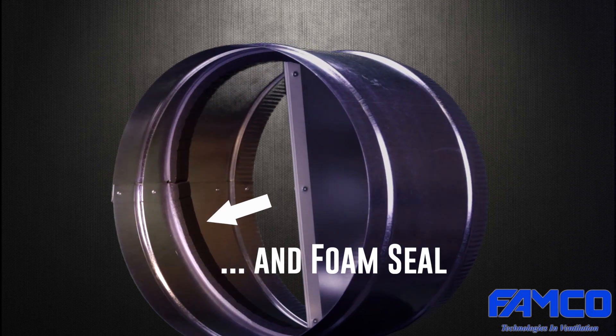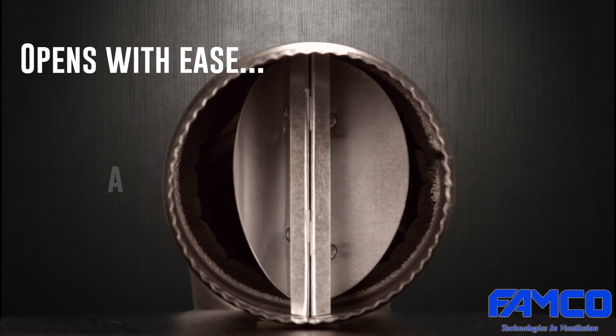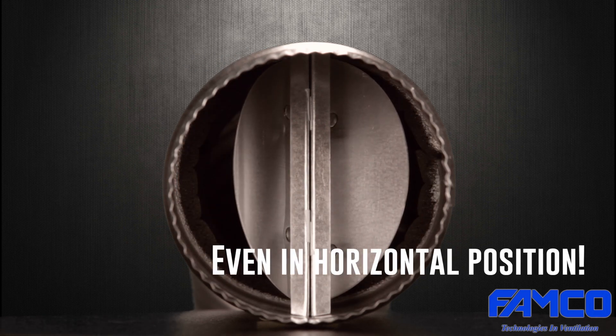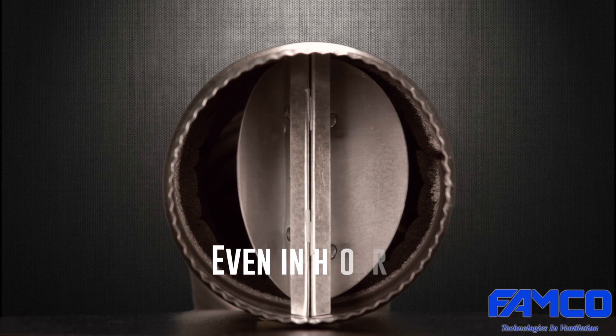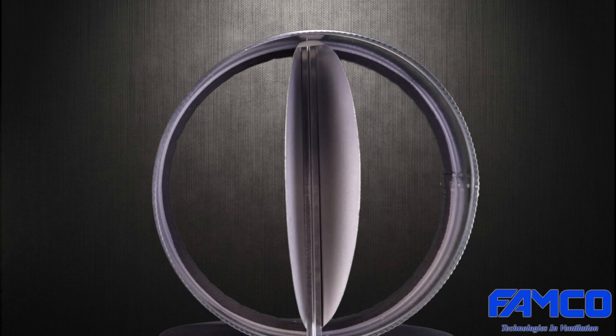It is constructed with a foam seal and two aluminum blades that allow air to easily flow through but not leak back into the ventilation system. Our backdraft dampers come in multiple sizes and you can purchase one by clicking on the link here.